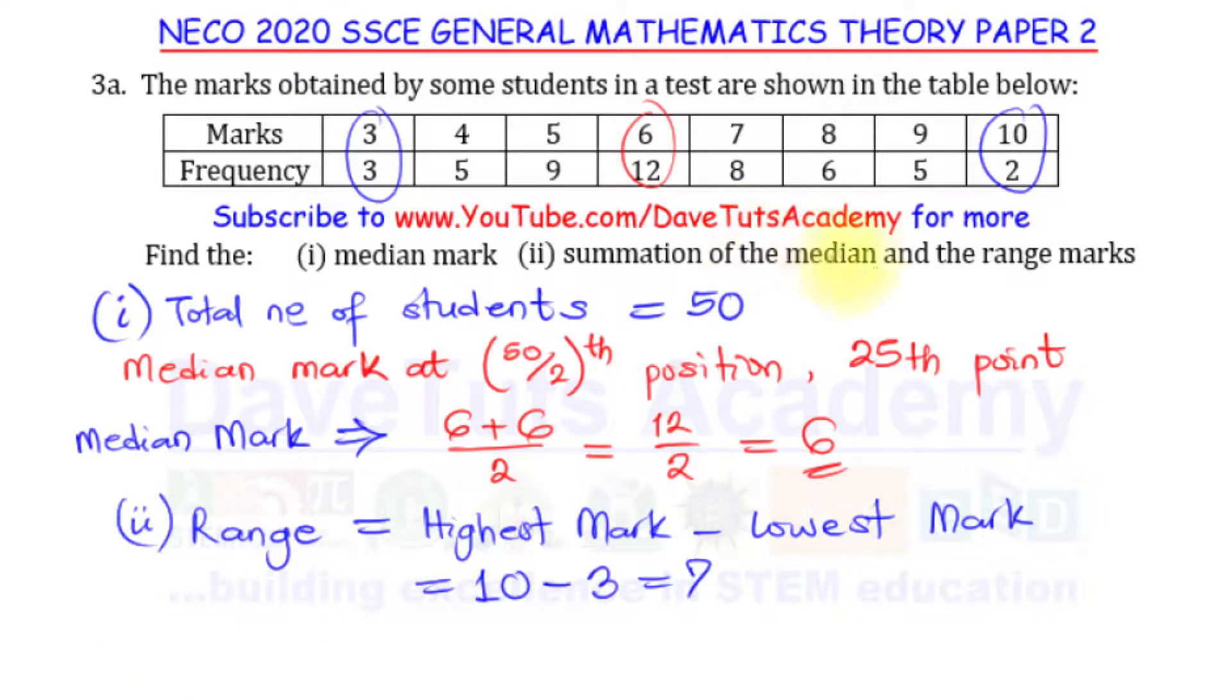But we are asked to find the summation of the median and range. The median we evaluated before plus the range we just evaluated will be: median is 6, range is 7, and the addition of the two will be 13. So 13 is the summation of the median and the range marks.